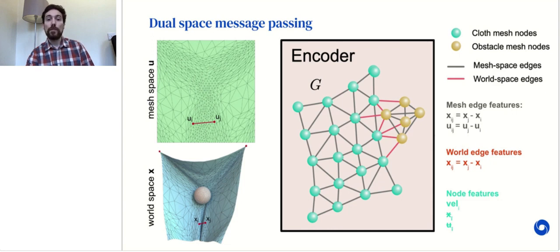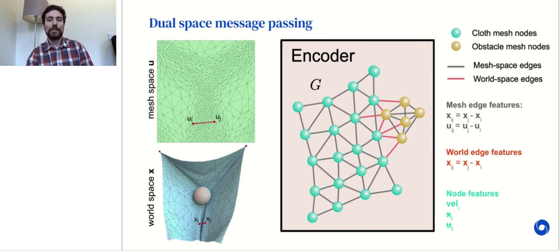First, we include both the workspace and mesh space relative positions between pairs of nodes as edge features of the mesh edges. But we also add additional workspace edges based on spatial proximity, with relative workspace position as features. These workspace edges will allow the model to learn about contact very efficiently, including self-collisions of the cloth. Finally, we add any remaining features, for example the velocity of the nodes, to fully specify the state.